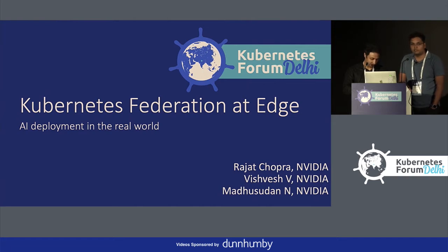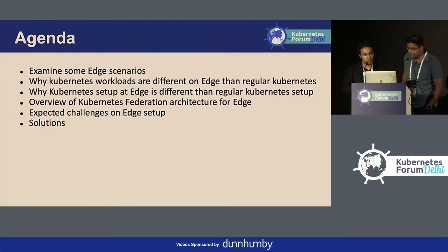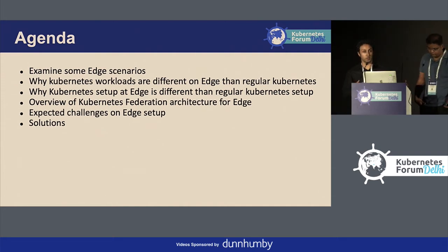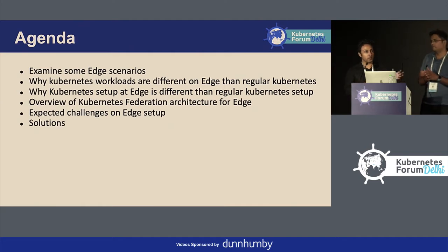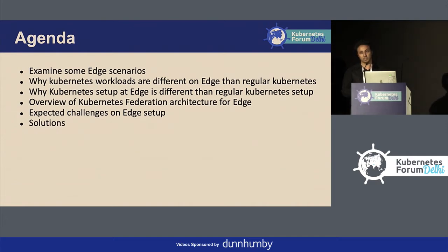Today we are going to talk about Kubernetes Federation at Edge. We will also talk about AI deployment to edge clusters in the real world. For the agenda: first, we need to understand what edge scenarios we are looking at and what issues we encounter. We will explore different kinds of workloads at the edge versus a regular Kubernetes server hosting microservices, and how the Kubernetes setup at edge differs from on-prem or cloud data centers. We'll cover the Kube Federation architecture suitable for the edge, and the challenges and solutions we have encountered.